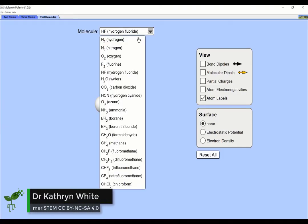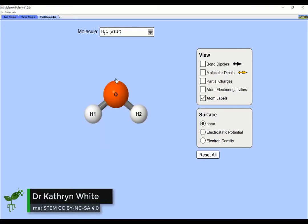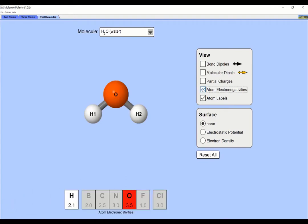Why is electronegativity important? Well, here's an example. The water molecule, H2O, is made of two atoms that have quite different electronegativities.